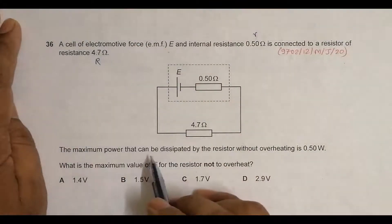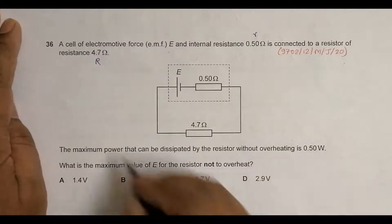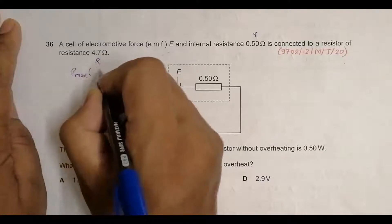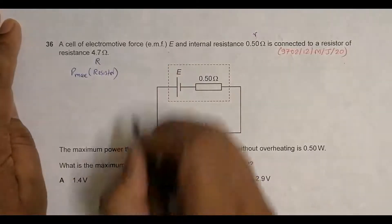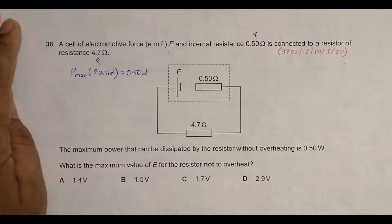The maximum power that can be dissipated by the resistor without overheating is 0.50 watts. So P_max in the resistor is equal to 0.50 watts. What is the maximum value of E for the resistor not to overheat? We have to find the maximum safe value for this E.